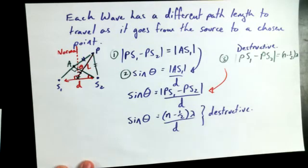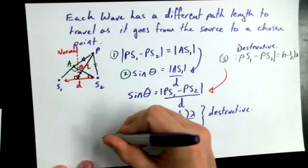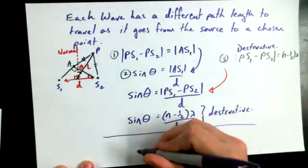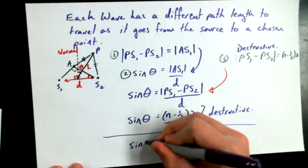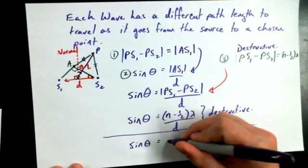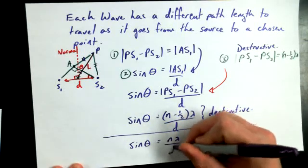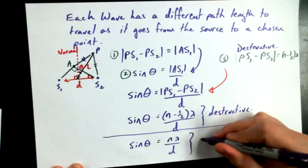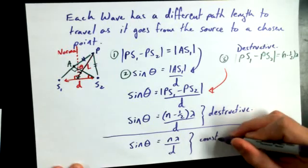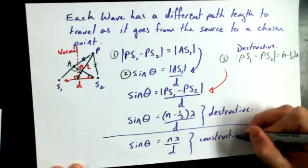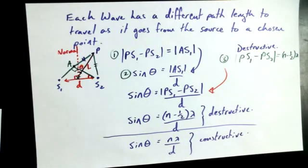Now a similar method could be used for finding constructive interference relative to theta and D and it would take on a similar format, sine of theta is equal to N lambda over D.